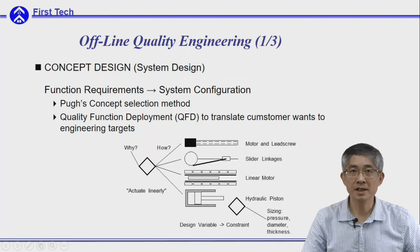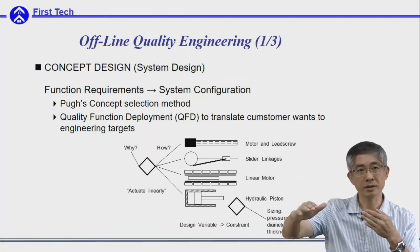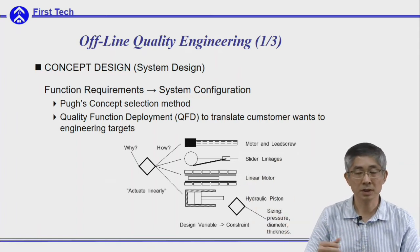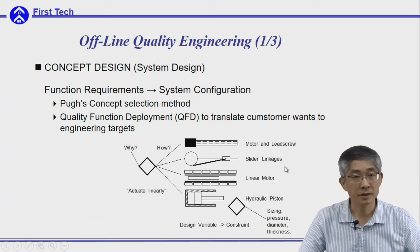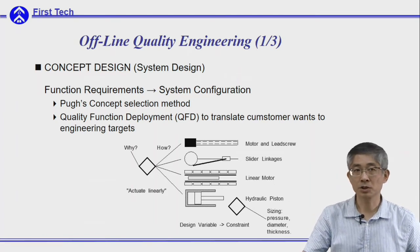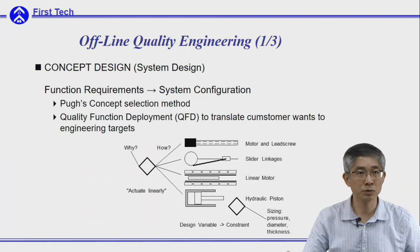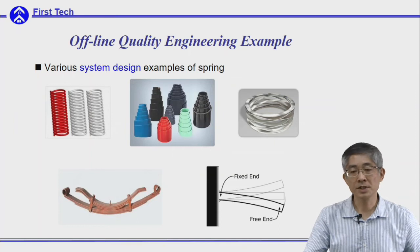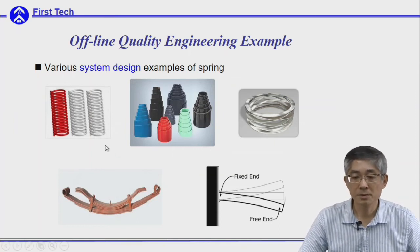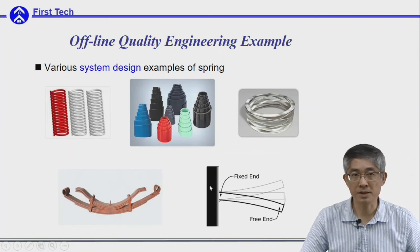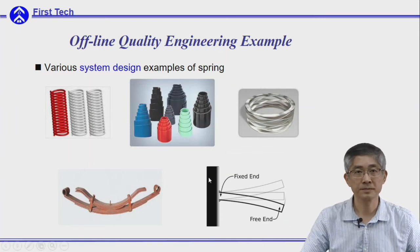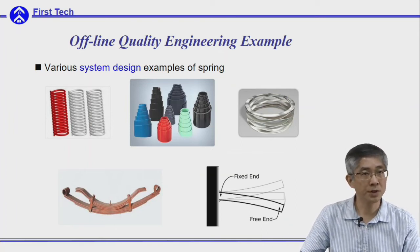Assume you want to design a linear mechanism for a CD player. There are many different kinds of possible mechanisms that can deliver the same function: a motor lead screw, slider linkage, linear motor, or even a hydraulic piston. At this stage, you need to consider which configuration will be best for your design requirement. Or, if you want to design a spring, there are spiral springs, leaf springs, or cantilevered springs — different systems that can fulfill the function of a spring. At this stage, you need to determine which one is the best.